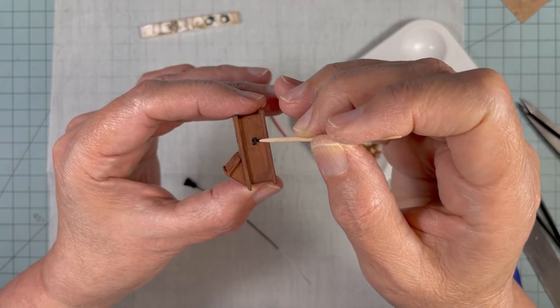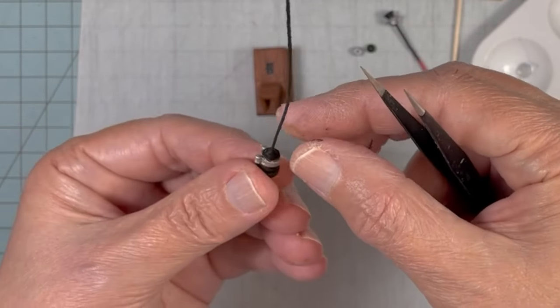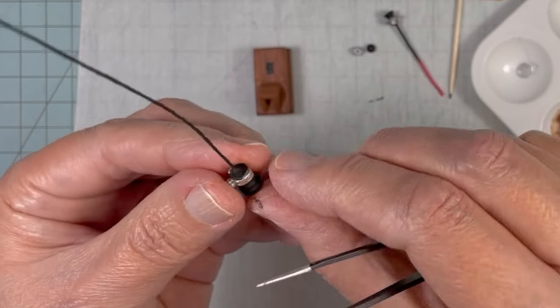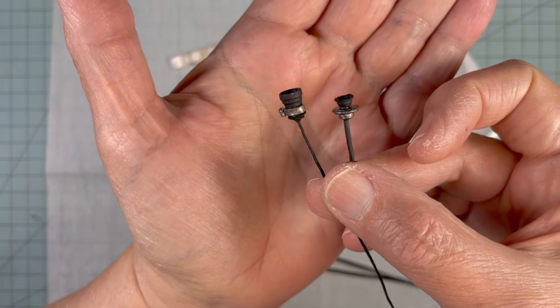I wanted the earpiece to be removable, but it was so fiddly I figured how often would I really remove it so I just went ahead and glued it on. So here is the mouthpiece and the earpiece.